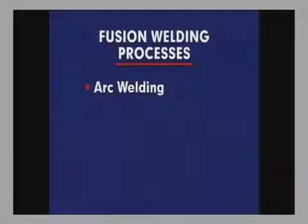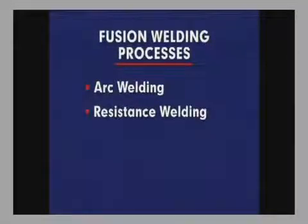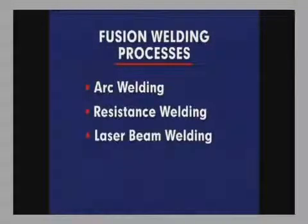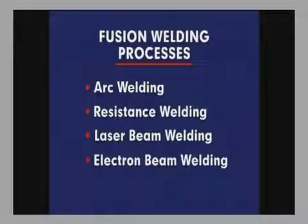In fusion welding, metal coalescence is created by melting a base metal and filler metal together, or by melting the base metal alone. The principal fusion welding processes are arc welding, resistance welding, laser beam welding, and electron beam welding.